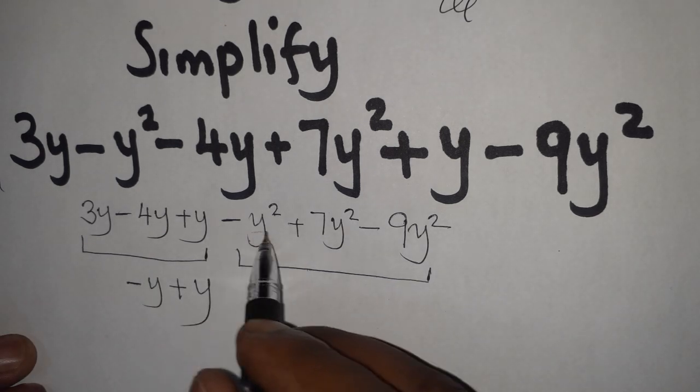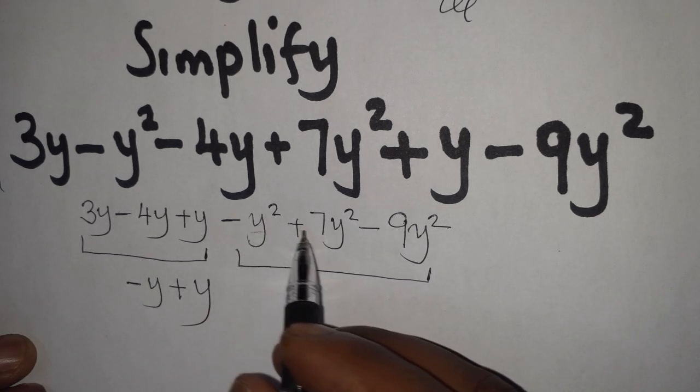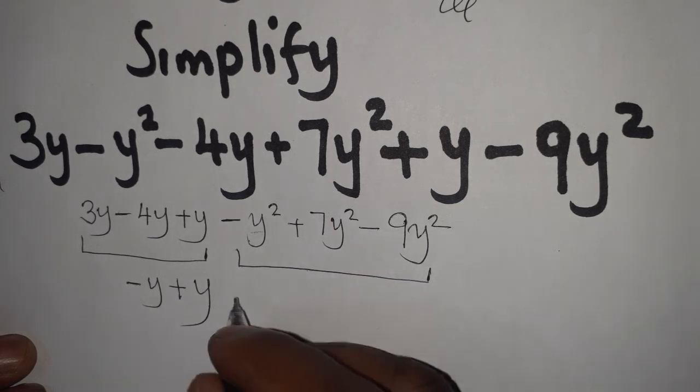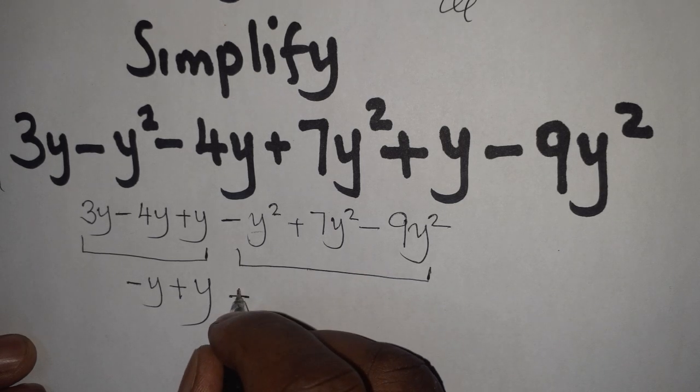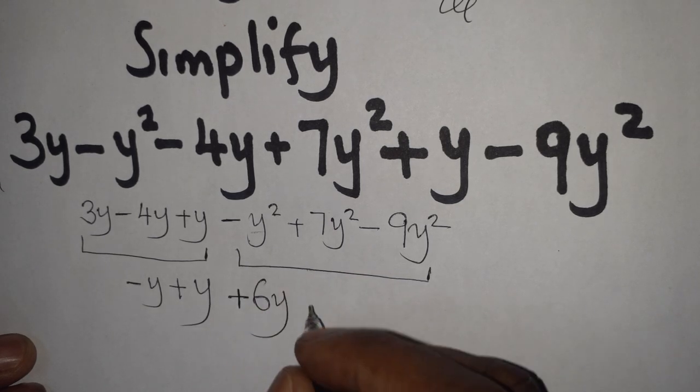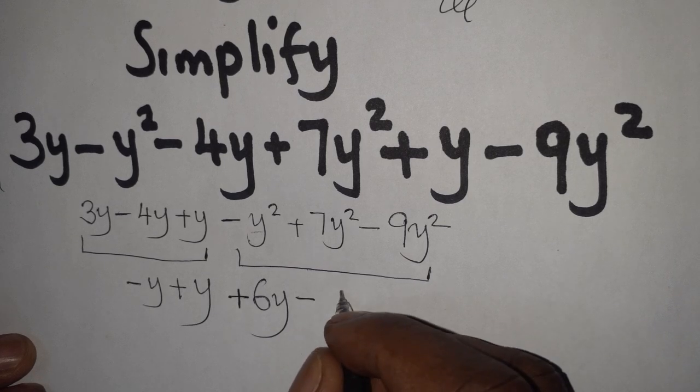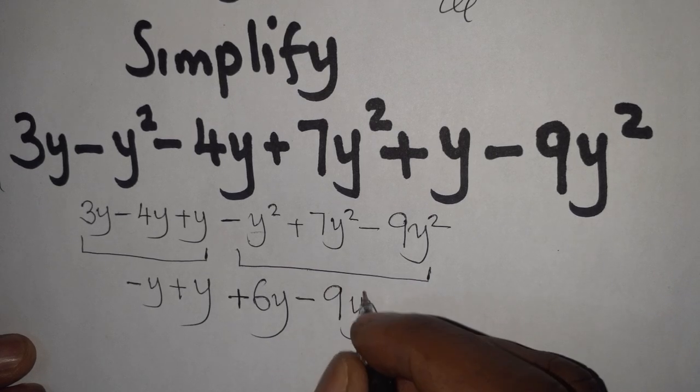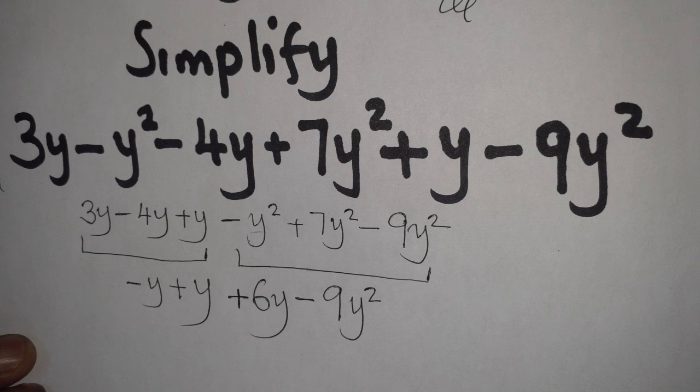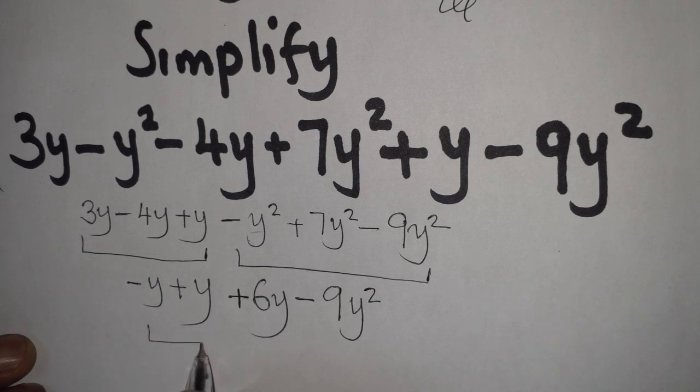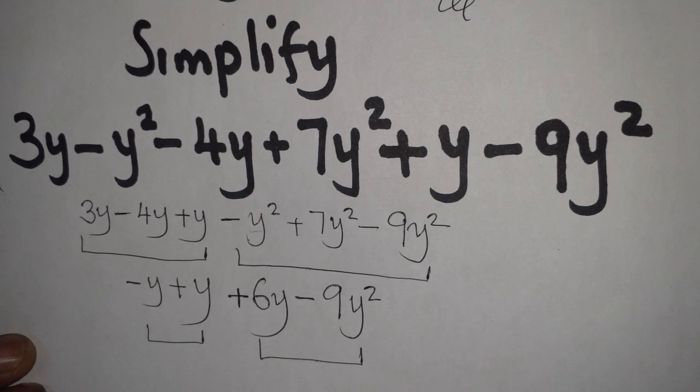Then the other side, when I work out the first two here, which is minus y squared plus 7y squared. This is going to give me plus 6y squared, then minus 9y squared. All right. Again, these are still like terms. These are also like terms here.